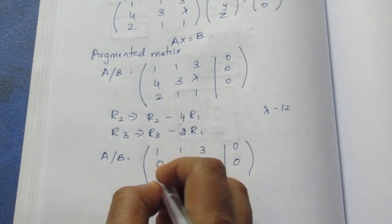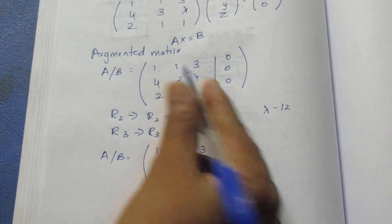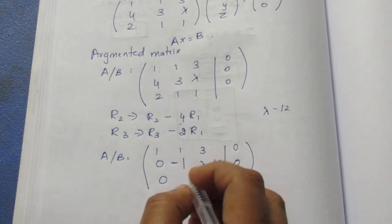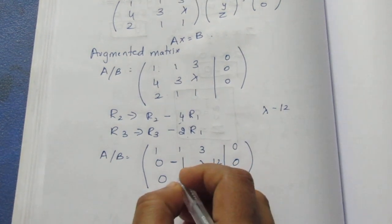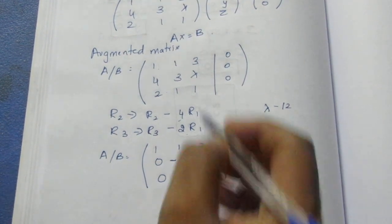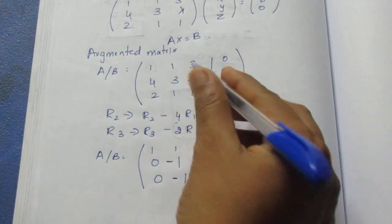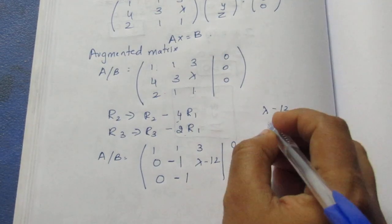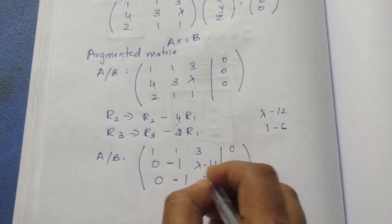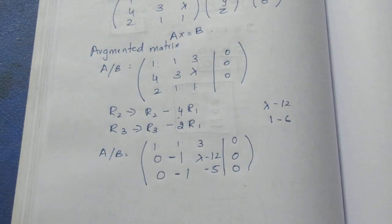For row 3: 2 minus 2 equals 0. Then 1 minus 2 equals minus 1. Then 1 minus 6 — that is, 3 times 2 is 6, so 1 minus 6 equals minus 5.